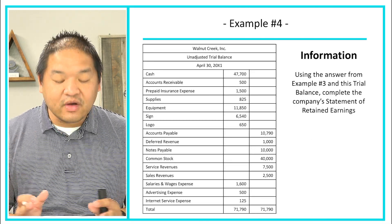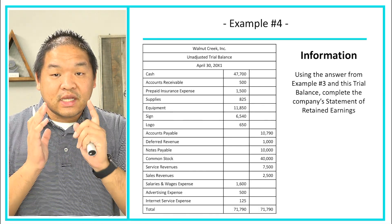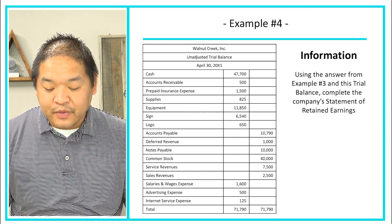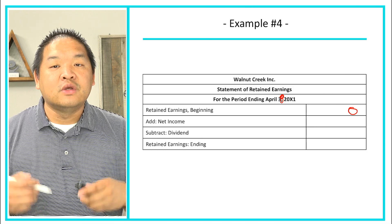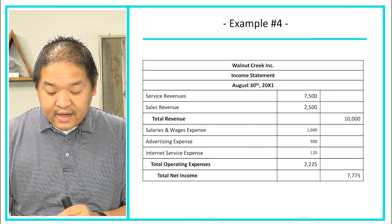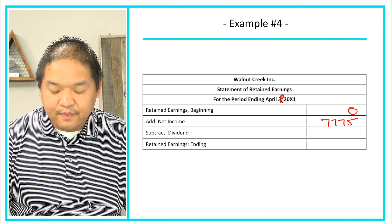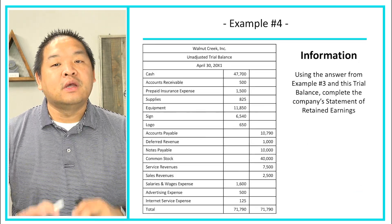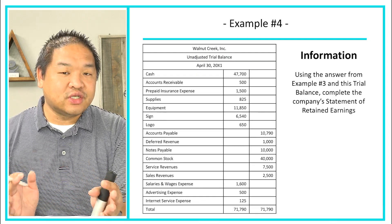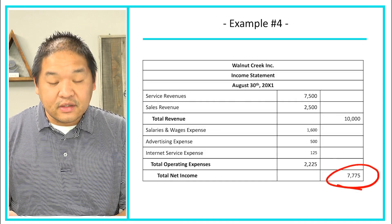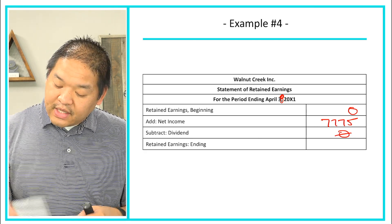Let's start with our retained earnings beginning balance. If we go back to the trial balance, I don't even have a retained earnings account, so the assumption is we use zero as the beginning balance. If there is a retained earnings balance you would use that number as a starting point — in this case we don't. So retained earnings beginning is zero. Then we add net income: from the last lesson we calculated net income at $7,775. Going back to the trial balance, there is no dividend, so we subtract zero.